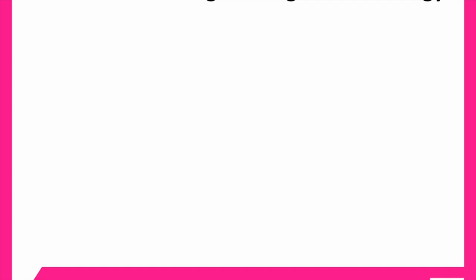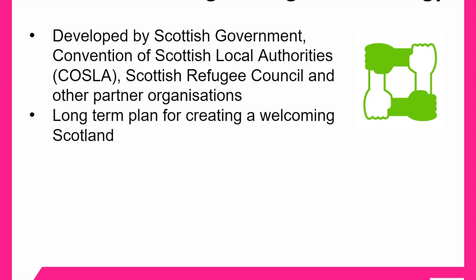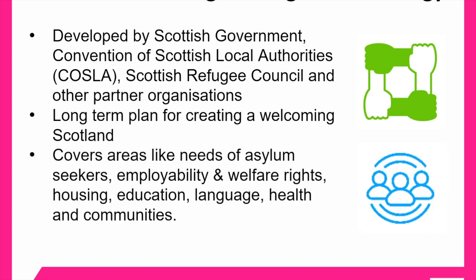In Scotland, we have the New Scots Refugee Integration Strategy, which was developed by the Scottish Government, the Convention of Scottish Local Authorities, the Scottish Refugee Council and other partner organisations. The strategy is a long-term plan which aims to support refugees and people seeking asylum in Scotland's communities, and it sets out a vision for a welcoming Scotland. It covers areas like the needs of asylum seekers, employability, welfare rights, housing, education, language, health and communities. There can be opportunities for community organisations to get involved both in the development and the delivery of the strategy. For more information about the New Scots Refugee Integration Strategy, please see our webpage.